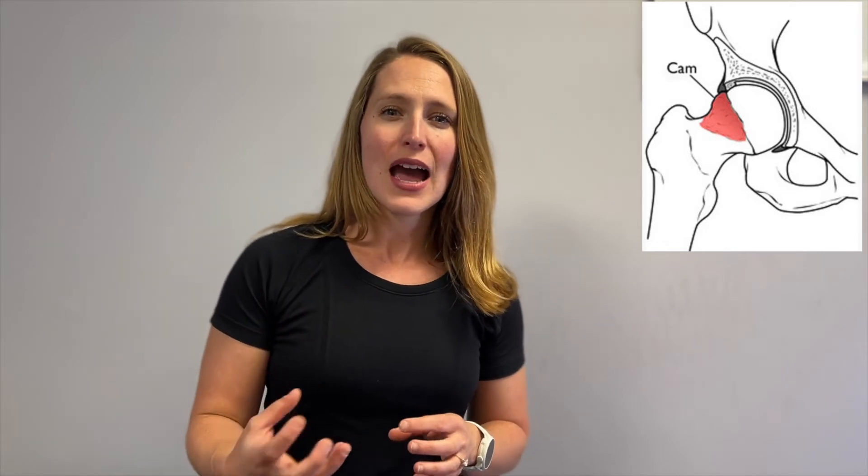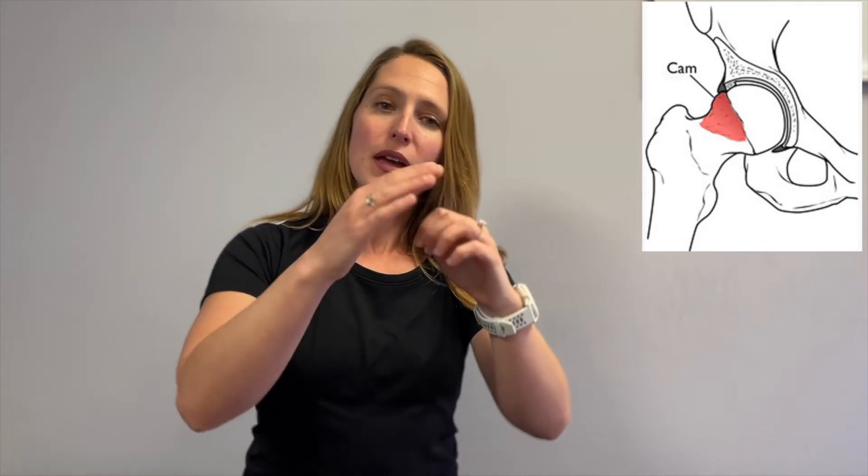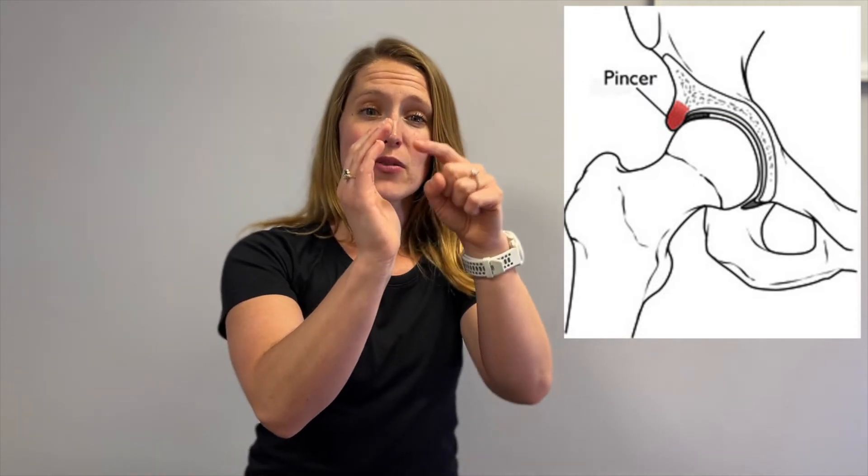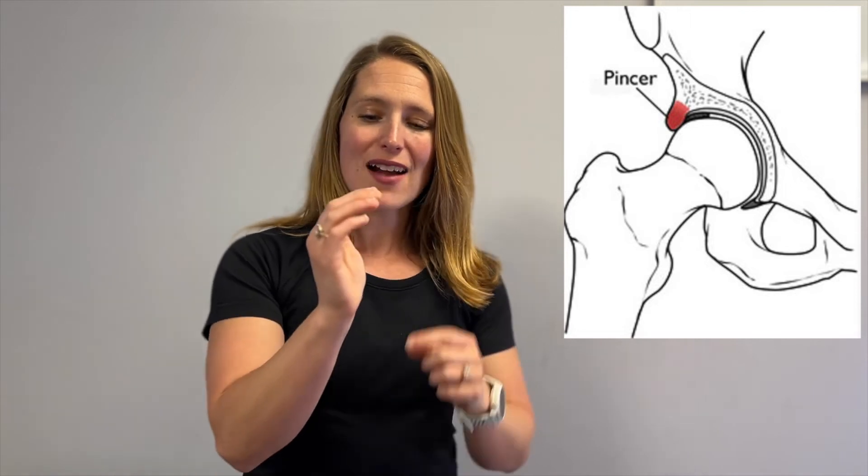There are several types of hip impingement. A cam lesion is where you have an extra buildup of bone on the head of the femur — as you lift your hip, there's extra bone sitting right in that area. A pincer lesion is where there's an extra little bit of bone coming out of the socket, right off the acetabulum. A mixed lesion is a combination of the two — a little extra bone on the femoral head and a little extra bone around the socket. As you move, it's just uncomfortable.